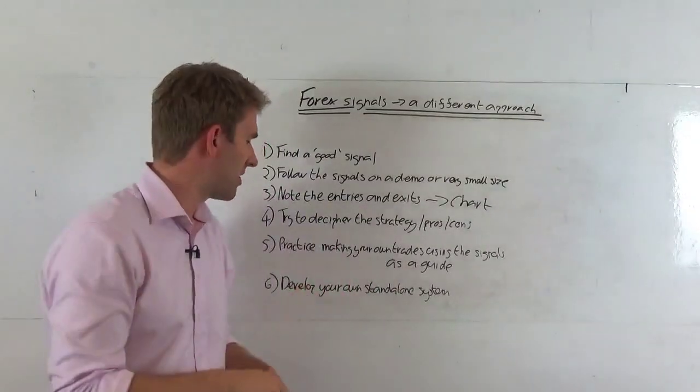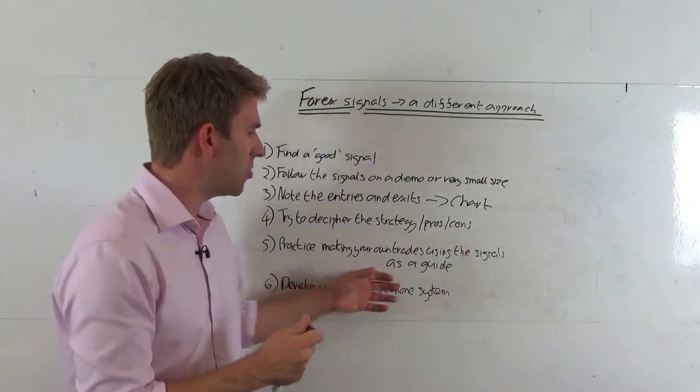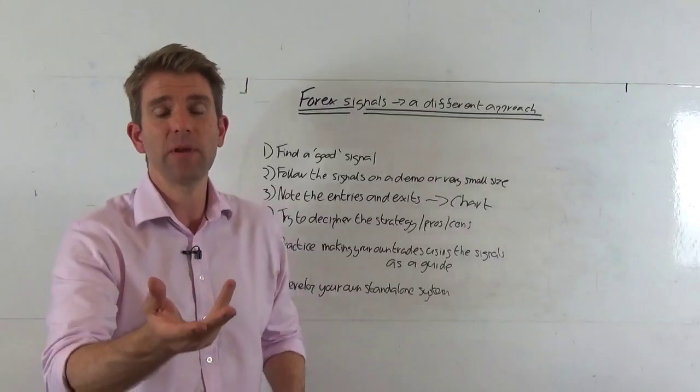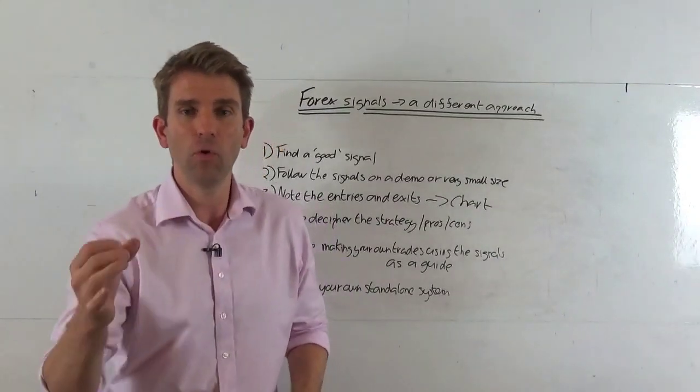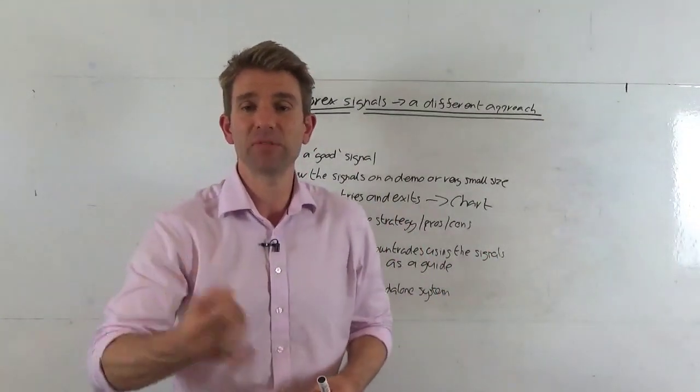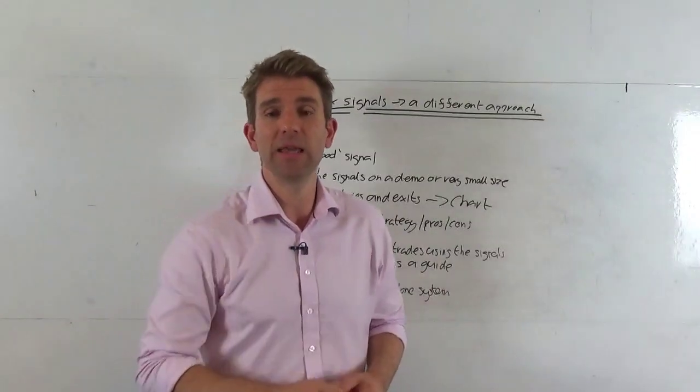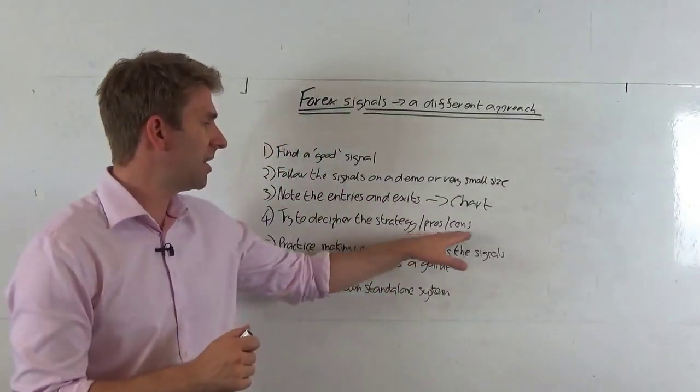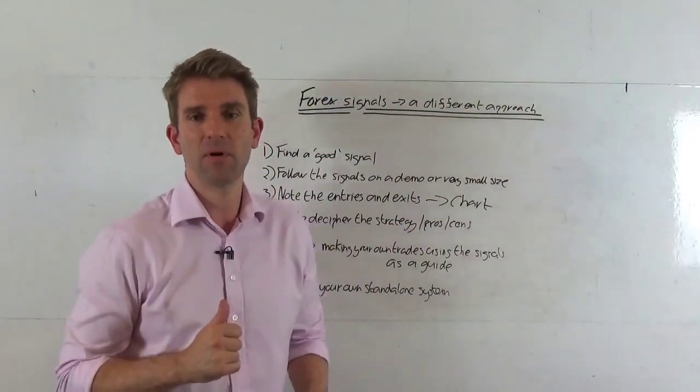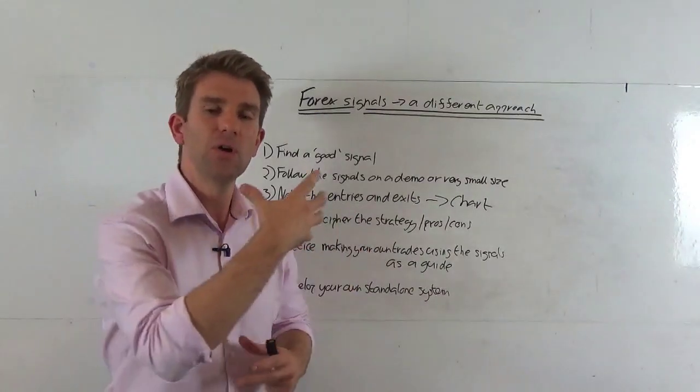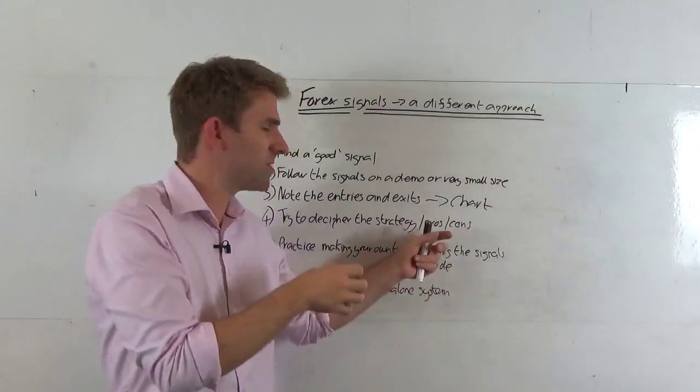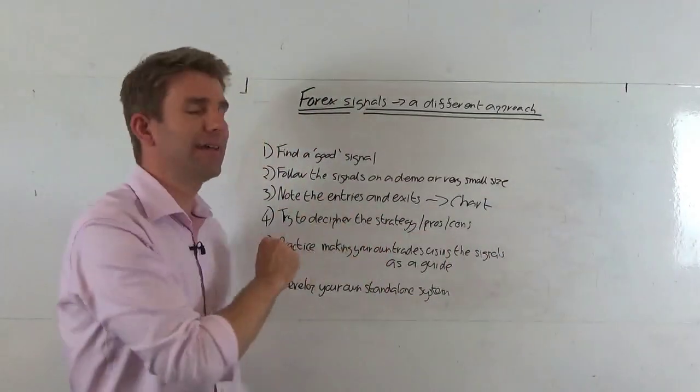So a long signal comes out on USD JPY, for example. You then look for a good entry based on what you know about the signal, what you know about the market, and you try and adapt it. Maybe you take the signal immediately. Maybe you say, actually you know what, I've recognized a little bit of a weakness in this guy's, a little bit early. I'm going to put that 20 pips under the market or 30 pips under the market, or whatever it may be. But you're using that as a kind of baseline, adapting and tweaking it based on your observations for pros and cons, and then you're adding your own flavor to it.